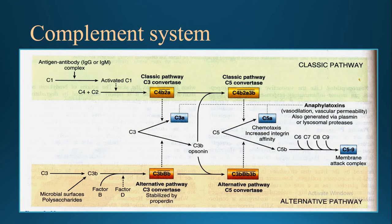C3B is an opsonin that fuses with C3 convertase to form C5 convertase, which stimulates C5 to form C5A and C5B. C5A is also an anaphylotoxin — both C3A and C5A are called anaphylotoxins, which initiate anaphylaxis leading to vasodilation, increased permeability of bronchomucosa, and other reactions. C5B fuses with C6, C7, C8, and C9 to form a large molecule called the membrane attack complex, which attacks the foreign body and leads to its destruction.